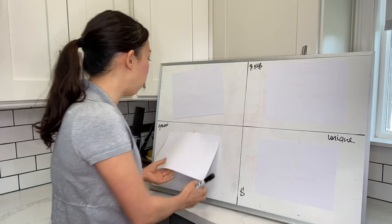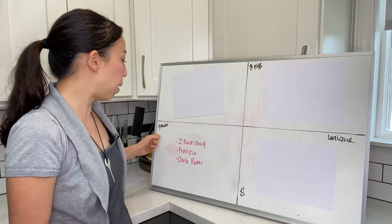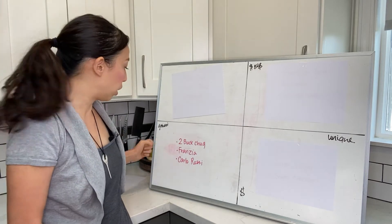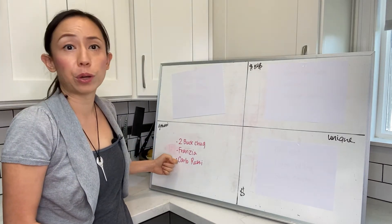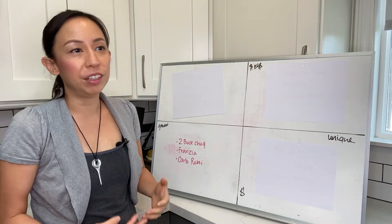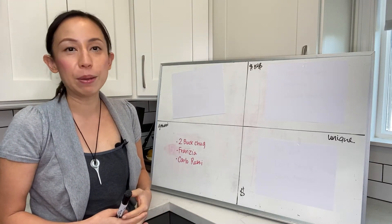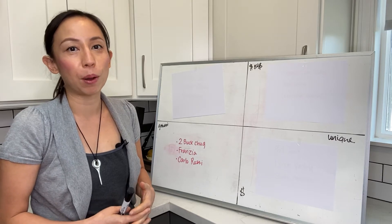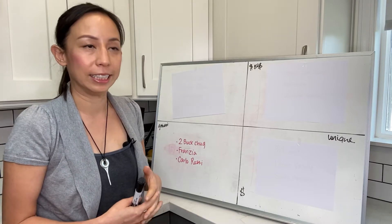So what do I mean by the wines in this quadrant? We're talking about your Two Buck Chuck, your Franzia, and your Carlo Rossi. The things that you're getting on the bottom shelf of a supermarket that's really cheap. Literally, the cost of the label, the shipping, and the bottle is probably more expensive than the wine that's actually inside.